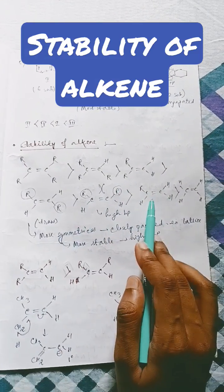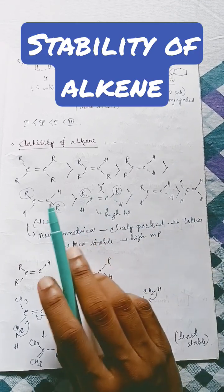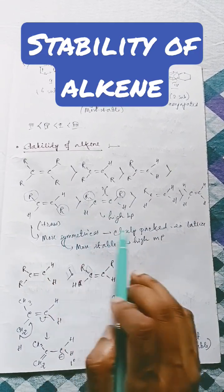And one degree carbon is more stable. That's the reason this one is more stable. Now here it is mono-substituted, here there is no substitution. Now just take care of the fact that trans is having high melting point.